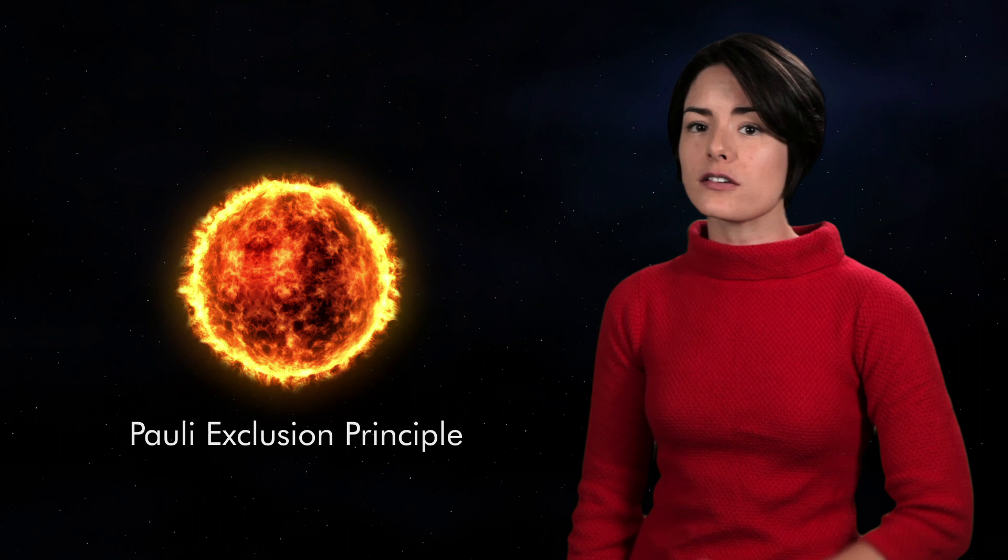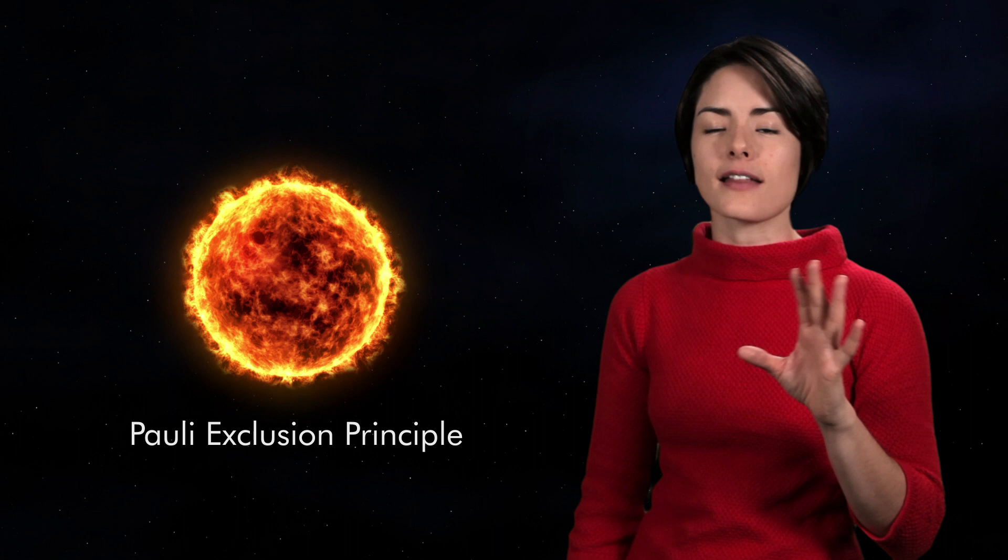The Pauli Exclusion Principle. This says roughly that two particles cannot occupy the same place at the same time. You now have a neutron star.